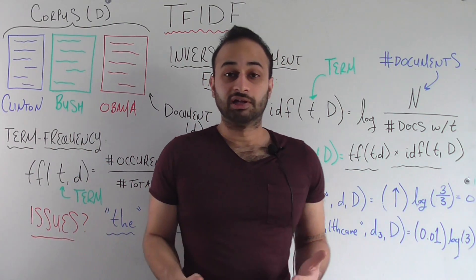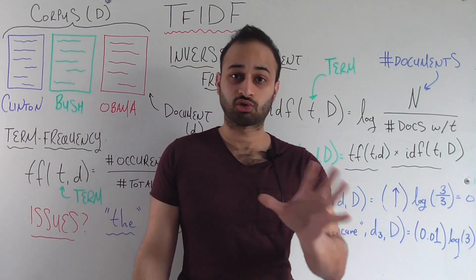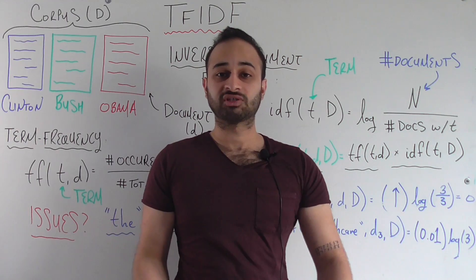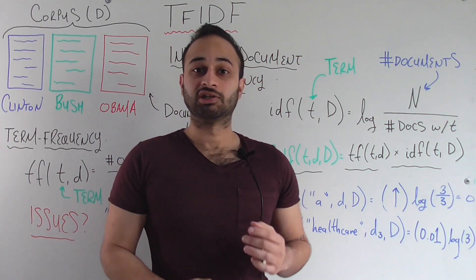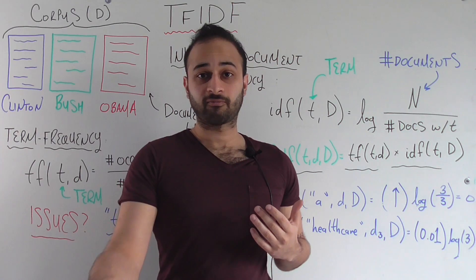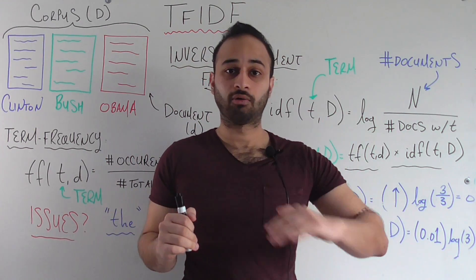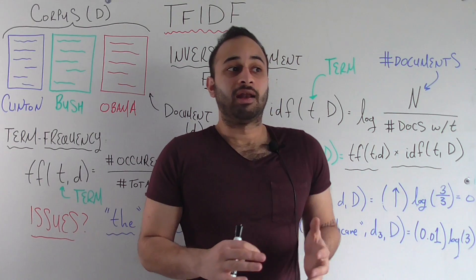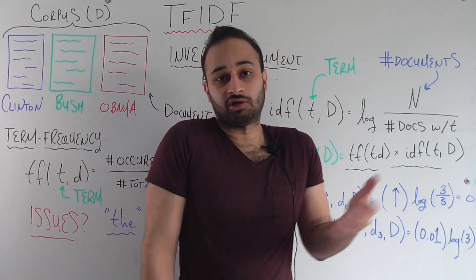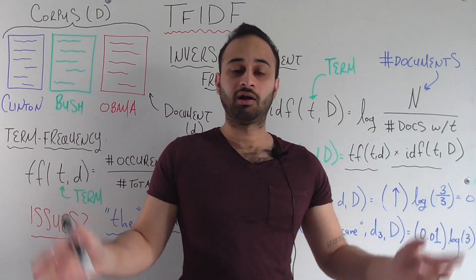Let's do a quick theoretical example: let's say that healthcare also occurs in the Clinton speech, but does not occur in the Bush speech. We still have 0.01, because that's the percentage of words in the Obama speech that are healthcare. But now our IDF has changed — it's not log 3, it's log 3 divided by 2, because now two documents in the corpus have the word healthcare. So it's log 1.5, and log 1.5 is smaller than log 3. Therefore, the TF-IDF of healthcare for Obama's speech goes down — and this is good, because healthcare is now less unique to Obama's speech. As the corpus gets bigger and a bigger fraction of documents contain the word, the less important it actually becomes.